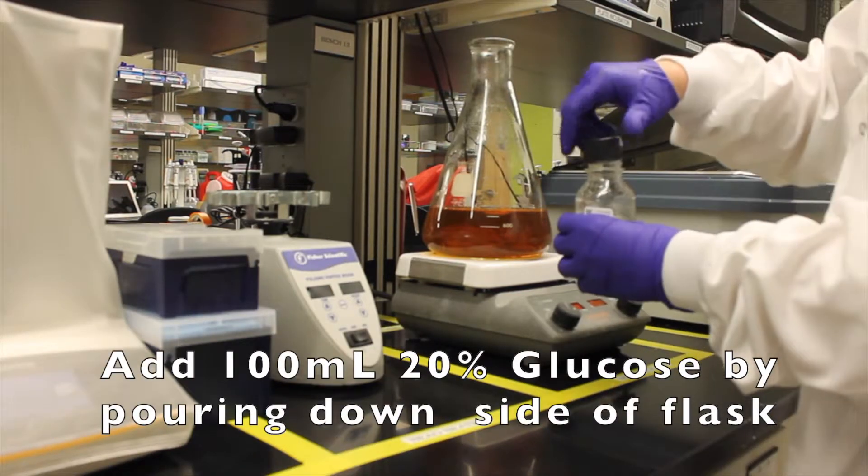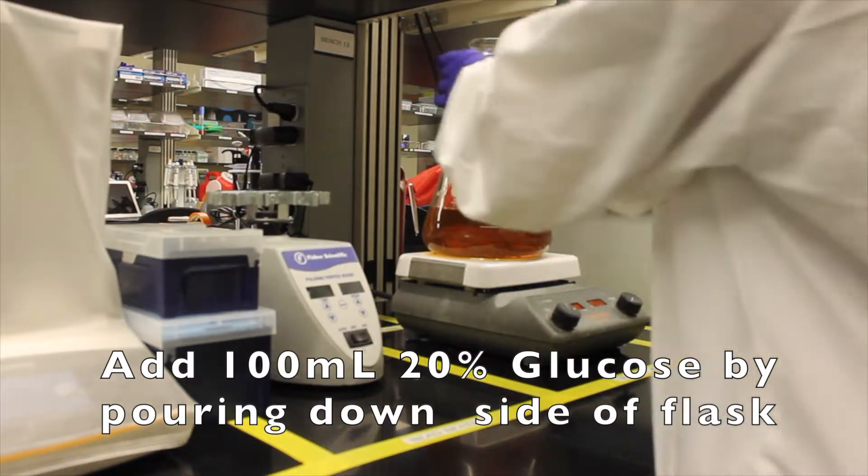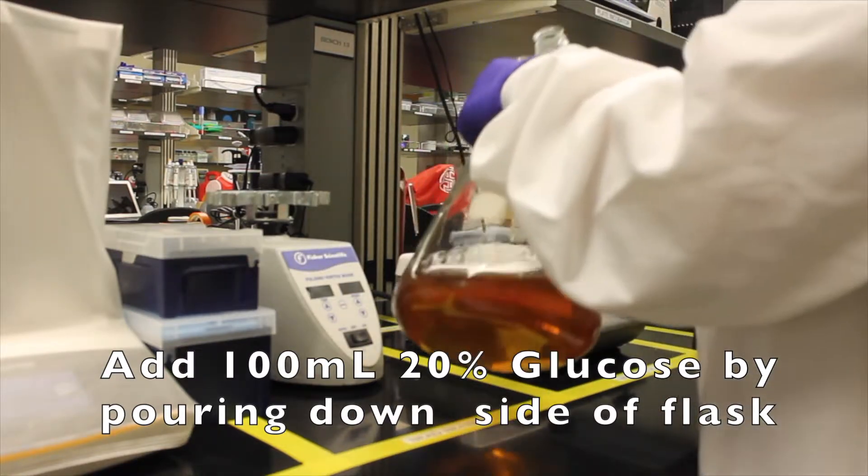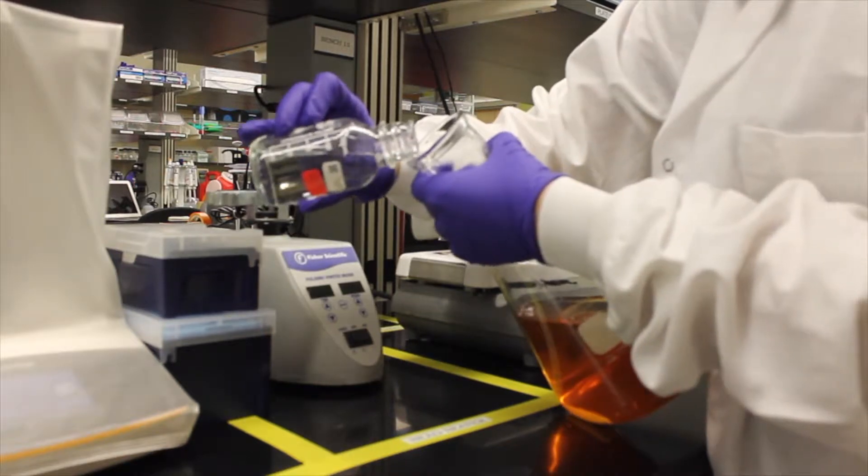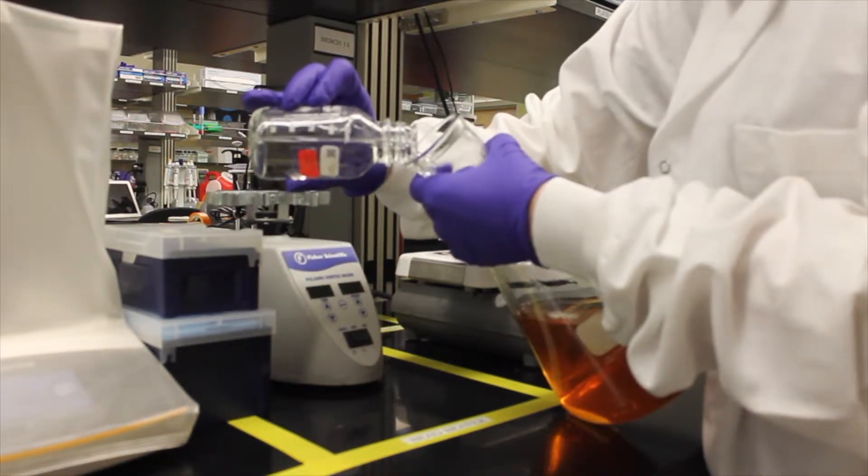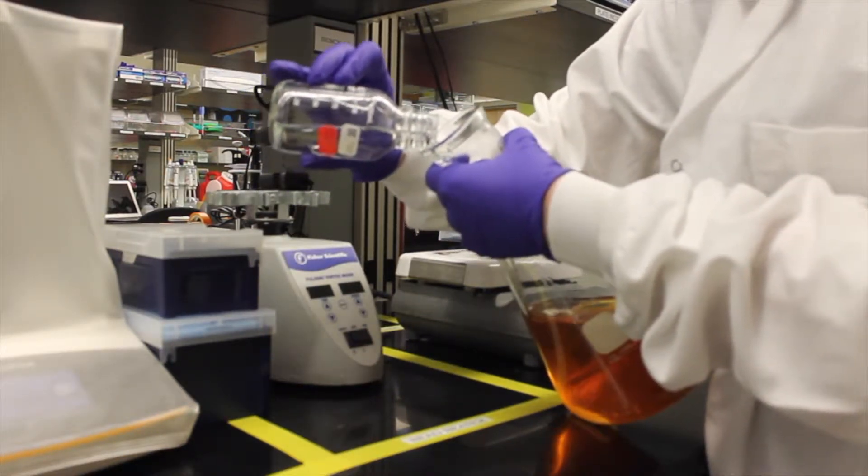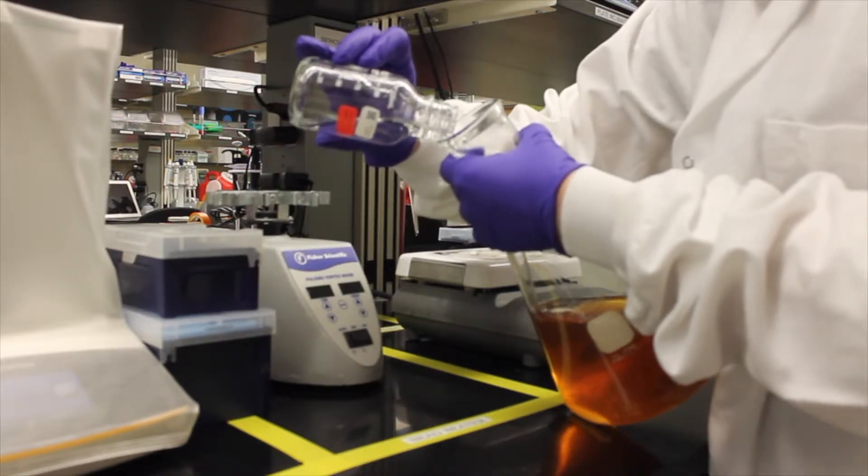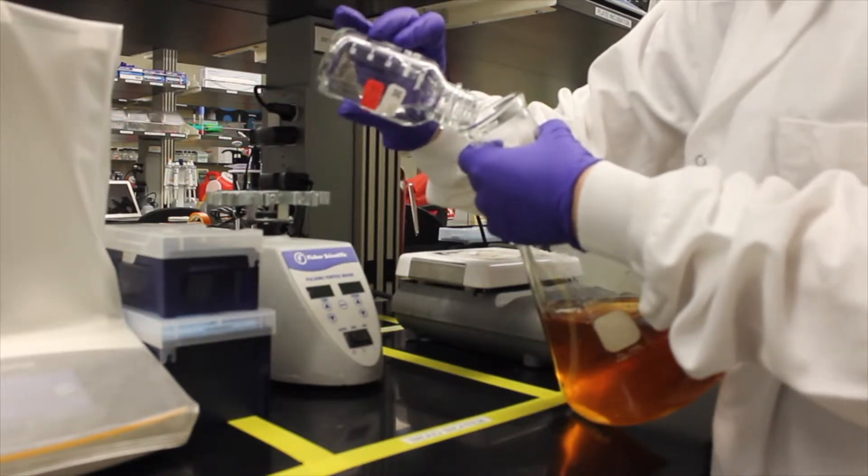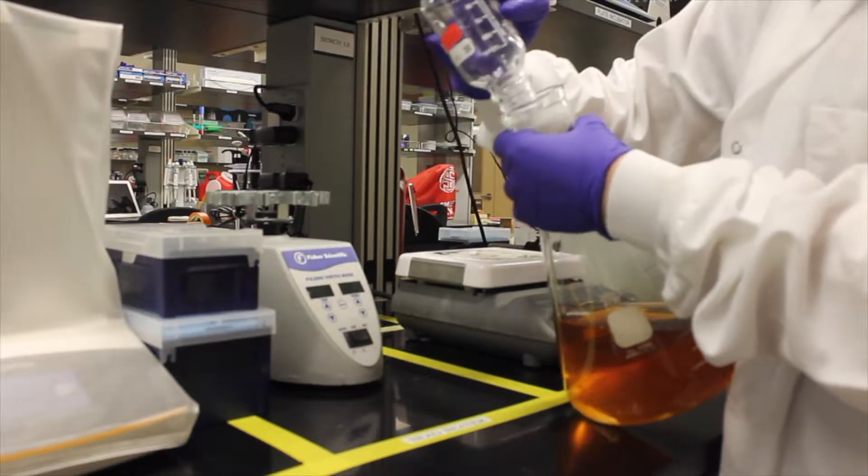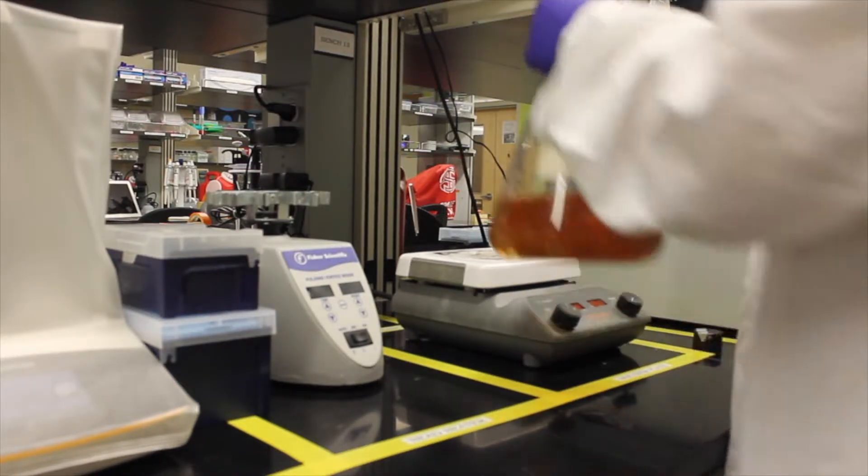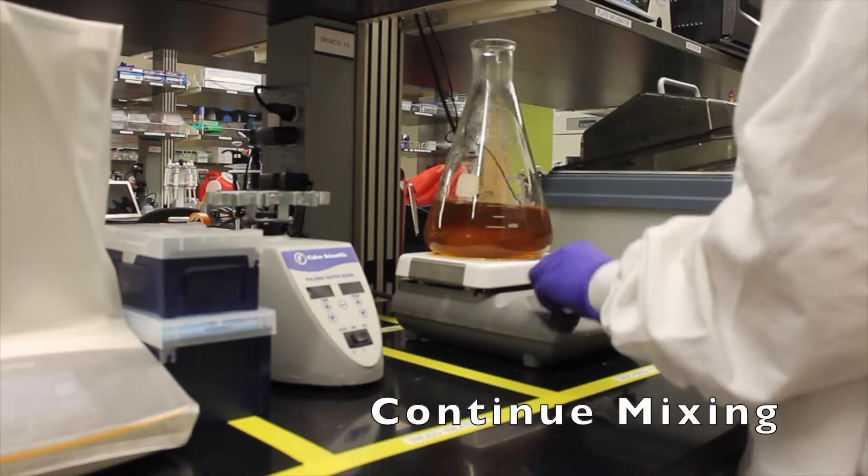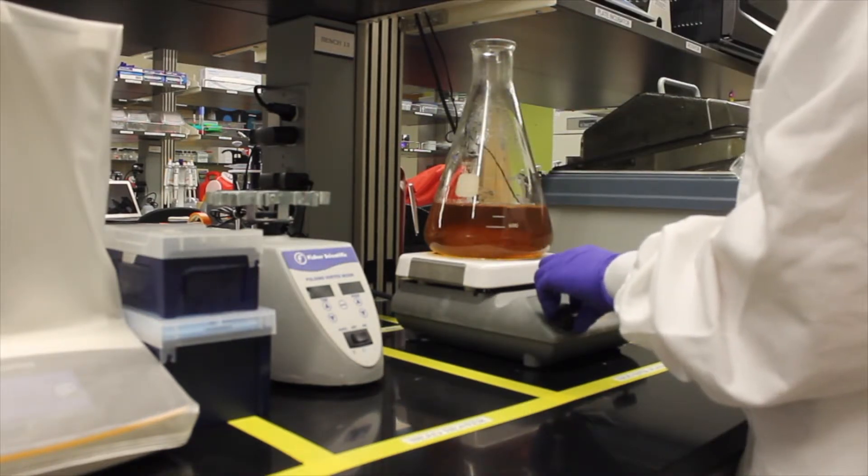We're going to add 100 milliliters of 20% glucose by pouring down the side of the flask. This makes sure that no bubbles are formed and that all the glucose can get evenly mixed throughout the liquid. Place back on the stir plate and begin stirring again.